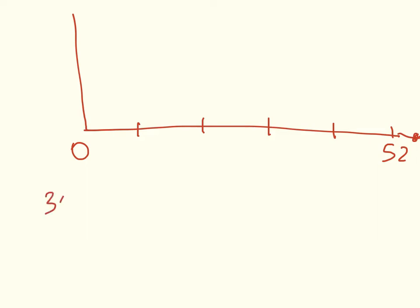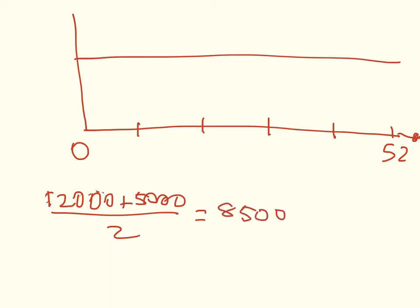12,000 is the max and 5,000 is the min, so we want to find the average of that first. The average is 8,500, and that lets me put in a midline here at 8,500.